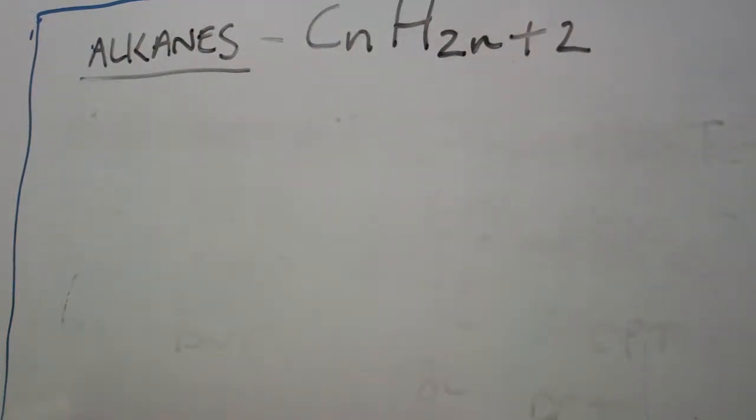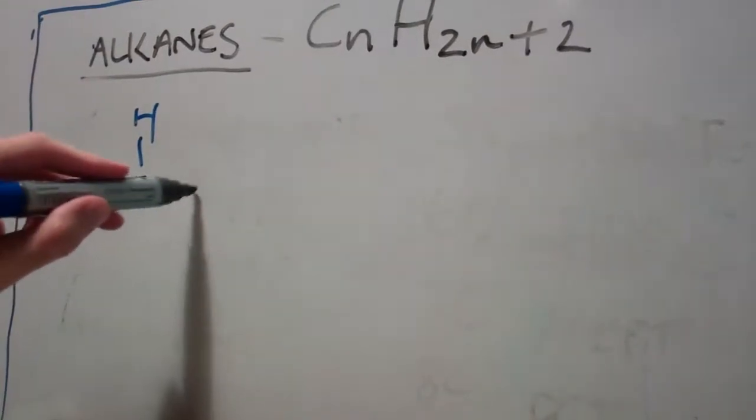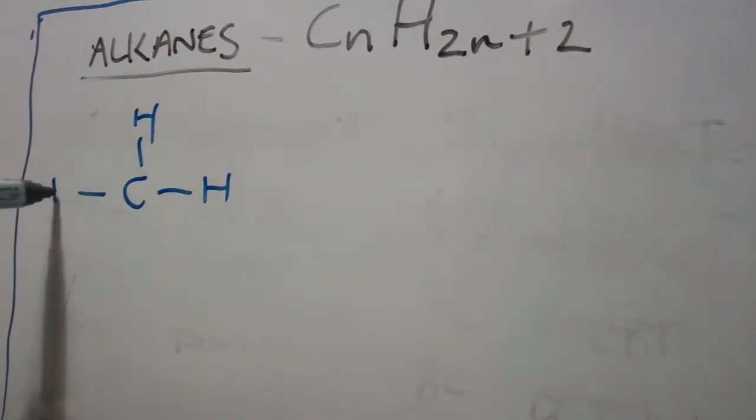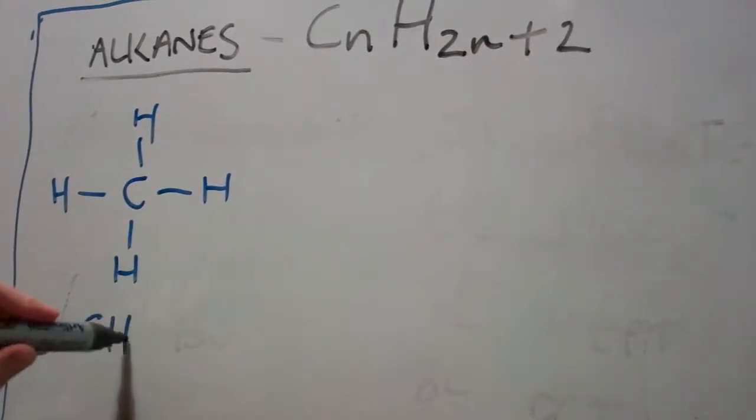So we're going to start by drawing the straight chain alkanes. We've done methane before. Follows the formula CnH2n+2. So methane, having one carbon will have four hydrogens, and they're just drawn around the carbon like this. So methane has the formula of CH4.